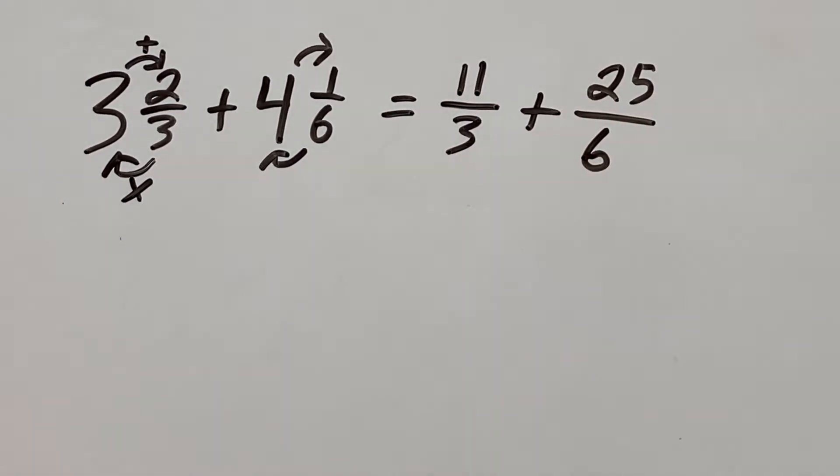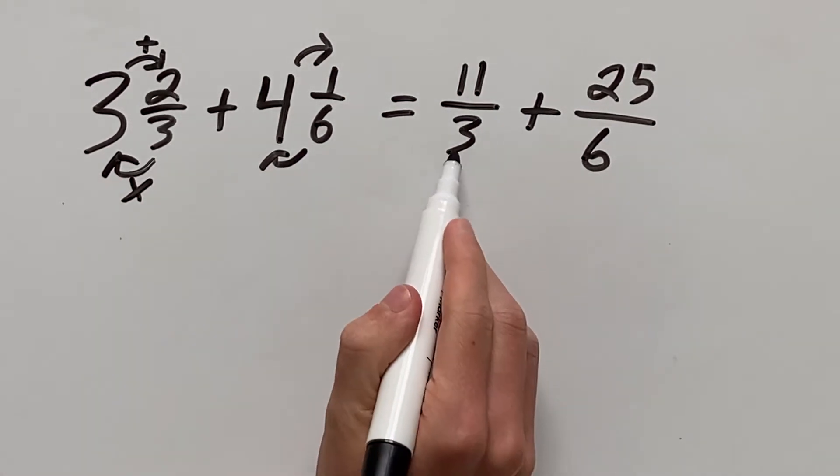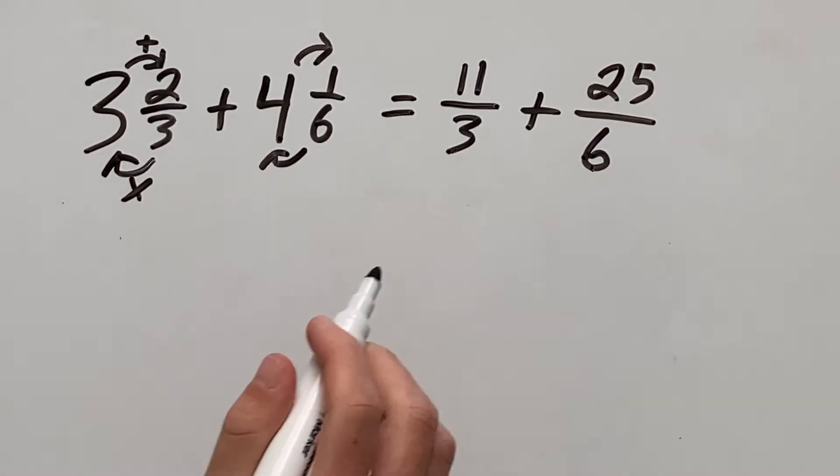Next up, we want to add these together but we can't quite yet because we have different denominators. We need to get a common denominator and in this case, the least common denominator is 6.